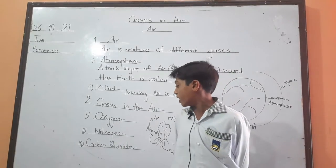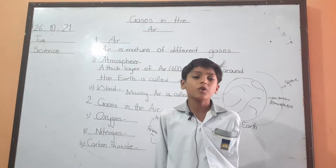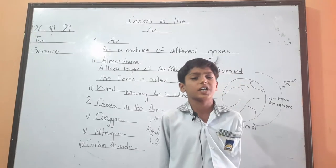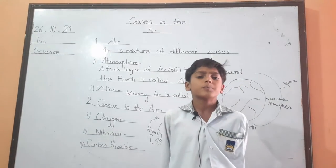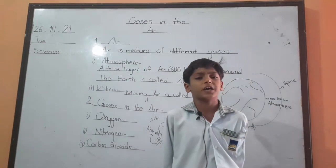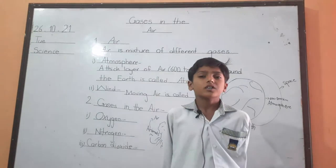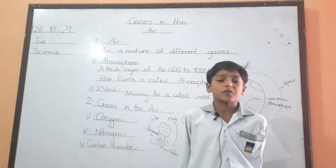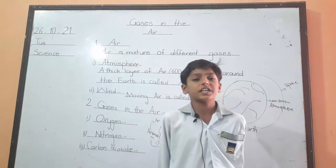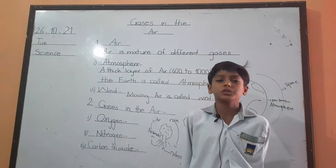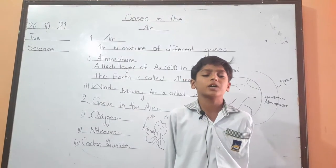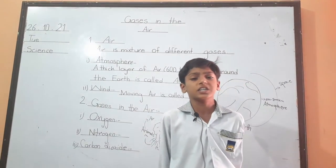Most parts of the air is nitrogen. It is 78% in the air. When we breathe, nitrogen goes out of our body. Plants are unable to get nitrogen directly.